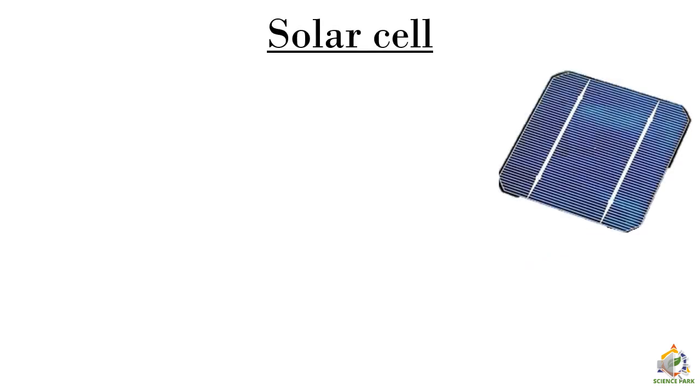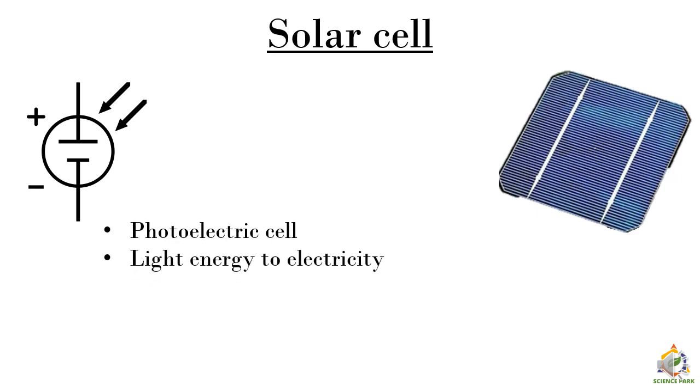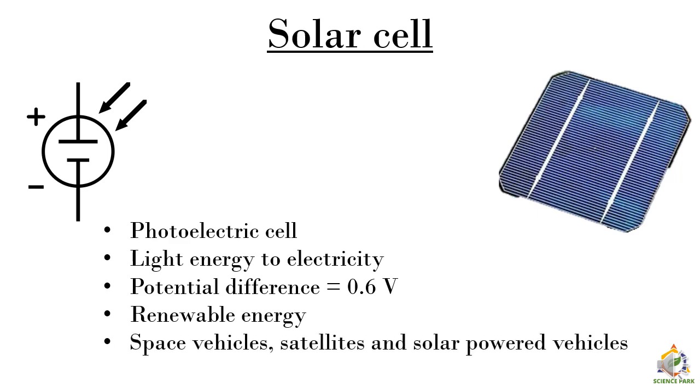Now we will learn about solar cell. The symbol for solar cell is a bit different from the regular electric cell because it is a photoelectric cell. In a solar cell, light energy is converted into electricity or electrical energy. The potential difference we get is around 0.6 volts. And the potential difference depends on the amount of sunlight falling on the solar cell. As you know solar energy is renewable energy, so it is quite effective to use the solar cells in our day to day life. And quite a lot of research is going nowadays to use solar cells. Solar cells currently are used in space applications, in space vehicles, satellites and in solar powered vehicles.